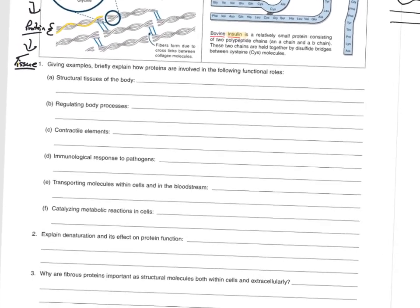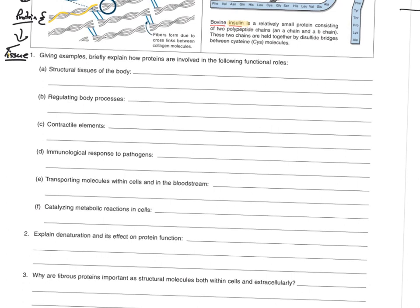Structural tissues of the body — proteins are involved: for example, collagen in skin. Regulating body processes — insulin opens the door that lets sugar in, and hemoglobin carries oxygen. Those are examples of proteins regulating body functions. Contractile elements, transporting, and catalyzing are topics to be covered later.